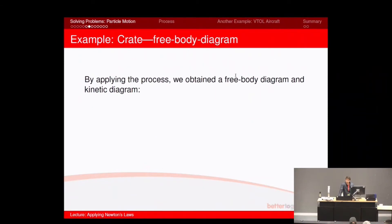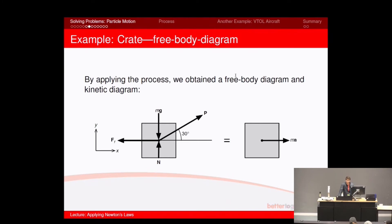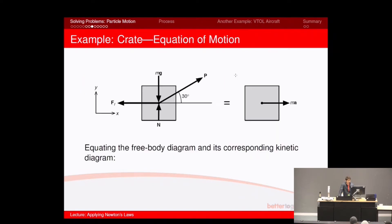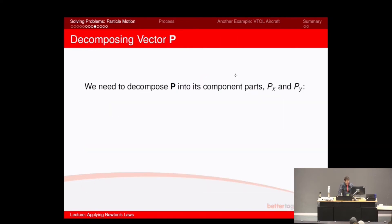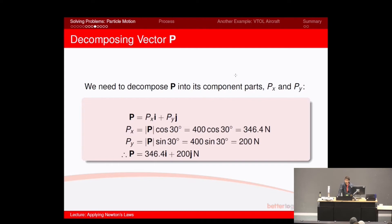First we obtain the free body diagram, which I've shown. I did not do the kinetic diagram, but here it is — it's a block showing you the direction of movement. So the sum of all forces is the external force p, plus mg, plus N, plus the frictional force — all four of them. You can see all of them are vectors written in bold. Now we need to break them all up into their components, and when we do that, they become scalars with the corresponding i and j unit vectors.